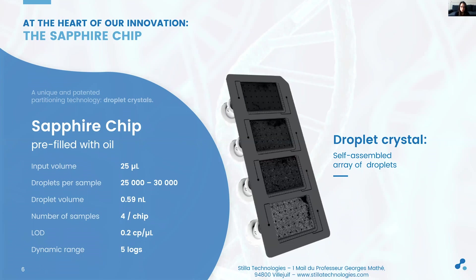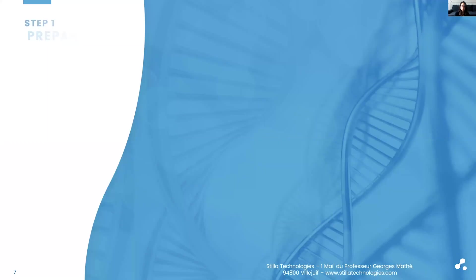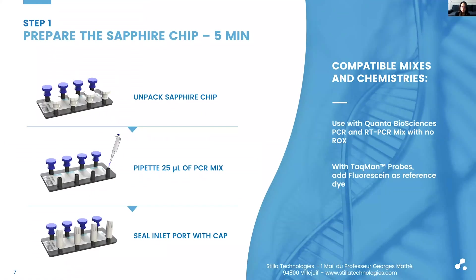It is possible to load up to four samples per chip. To load the chip with PCR mix, you simply open the inlet port, pipette 25 µL of mix on top of the oil already inside, and seal the inlet port with the cap. In terms of compatible chemistries, you can run digital PCR experiments starting from DNA, or one-step RT digital PCR experiments starting from RNA, and the system is compatible with TaqMan probes for fluorescence detection.